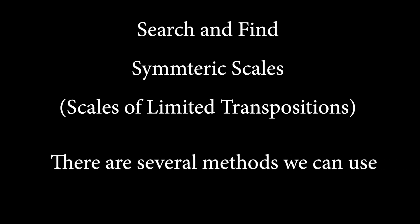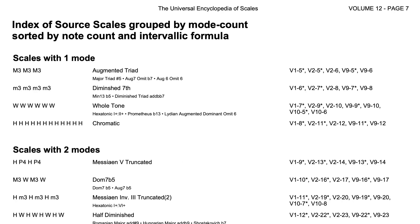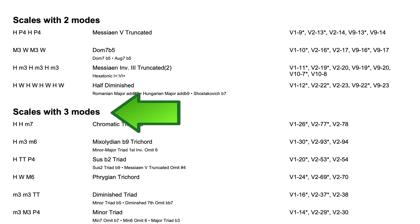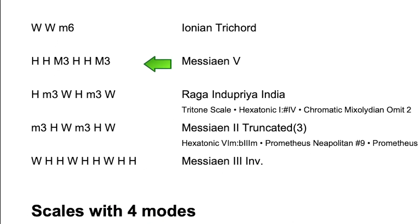Now let's say I want to find an interesting scale, like one of those scales of limited transpositions — one of those symmetric scales. No problem, there are two ways to do this. Let me show you an interesting way first. Let's use the first index here: index of source scales grouped by mode count, sorted by note count and intervallic formula. So here it says scales with three modes. If we go to the end of this list, you'll notice that there are some scales with a longer intervallic formula. This means these scales have more than three notes but only three modes, and therefore they must be symmetric.